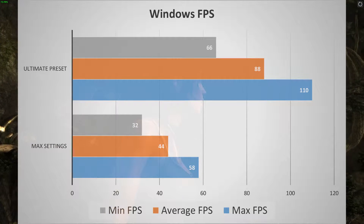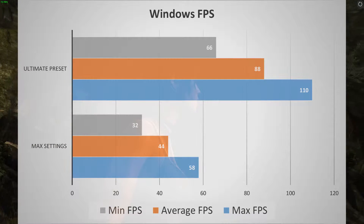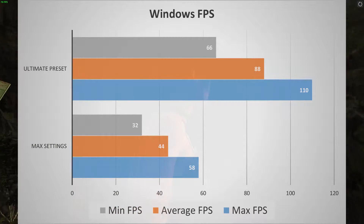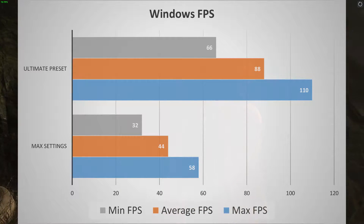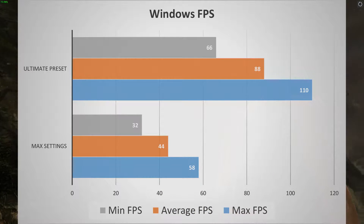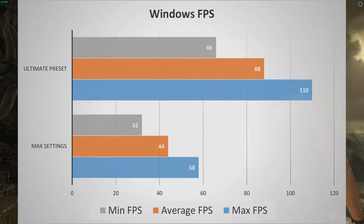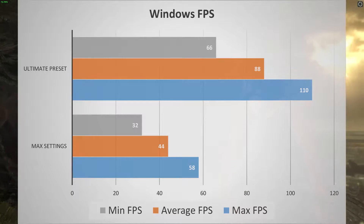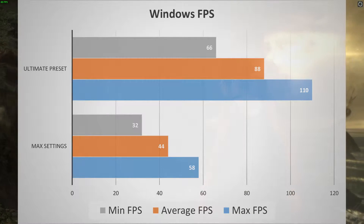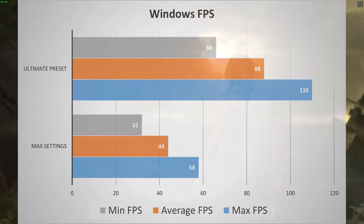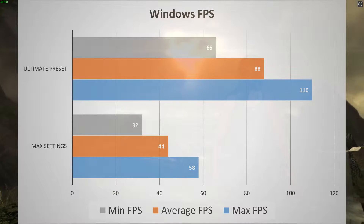That is clearly much higher than the FPS we achieved on Linux, and that's a bit disappointing because the port seems to not be that well optimized. Tomb Raider is a native DirectX game that has been ported to work on OpenGL, and therefore performance is not as good as on Windows.